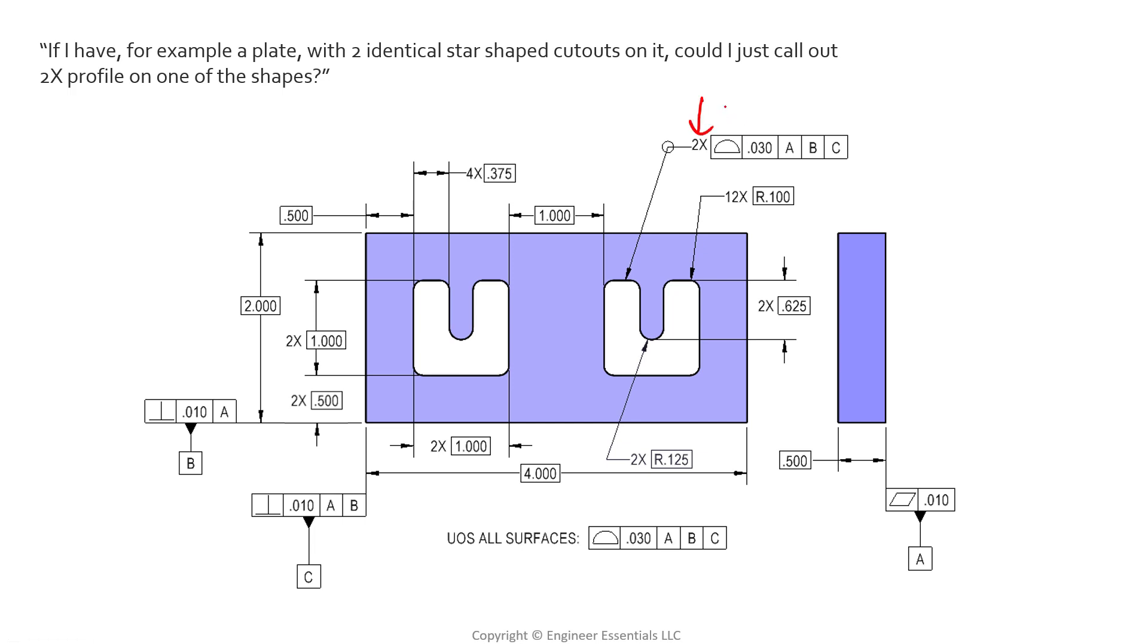And we have a callout here with a profile of 2X. So the short answer to the question is yes, you can control two identical shaped cutouts with one profile of surface callout if you put a multiplier of 2X in front of it. Let's dig in a little bit deeper to try and understand what this feature control frame is controlling and how it's controlling both of these profiles.